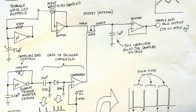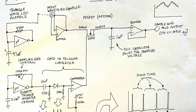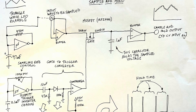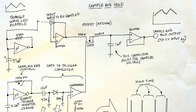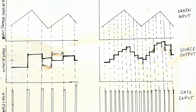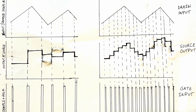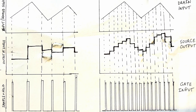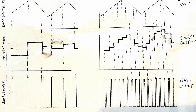Now that we have these sampled and held voltages, my purpose is to use them as a control voltage for a separate voltage controlled oscillator — applying it to the base of a transistor to use it as a variable resistor. Using the potentiometer on the square wave oscillator, you can change the sampling rate, allowing very coarse or very fine steps as seen on screen.